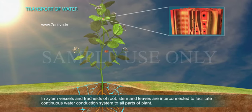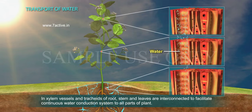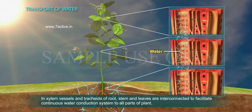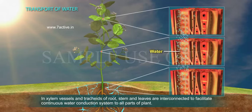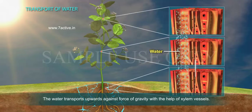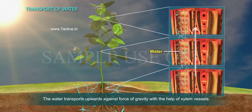In xylem, vessels and tracheids in roots, stem, and leaves are interconnected to facilitate a continuous water conduction system to all parts of the plant. Water is transported upwards against the force of gravity with the help of xylem vessels.